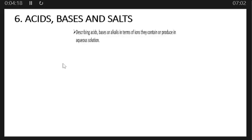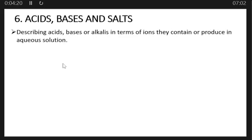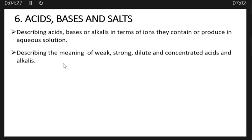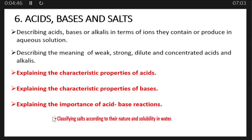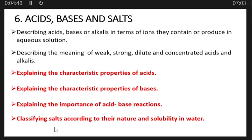Topic six is acids, bases, and sorts. Describing acids, bases, or alkalis in terms of ions they contain or produce in aqueous solution. Describing the meaning of weak, strong, dilute, and concentrated acids and alkalis. Explaining the characteristic properties of acids and bases. Explaining the importance of acid-base reactions and classifying salts according to their nature and solubility in water.